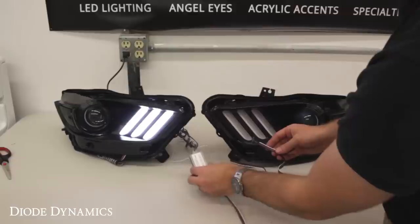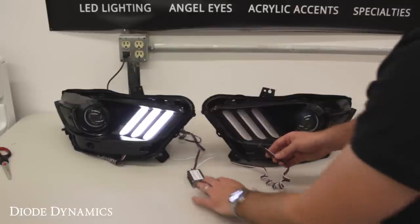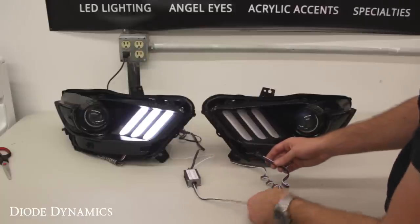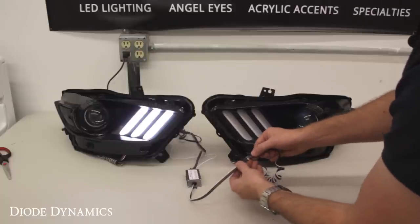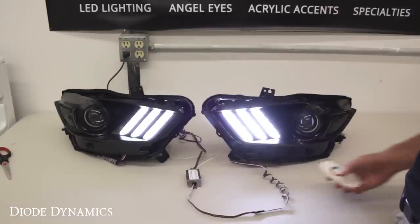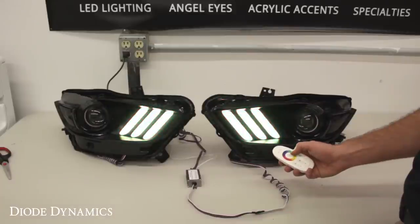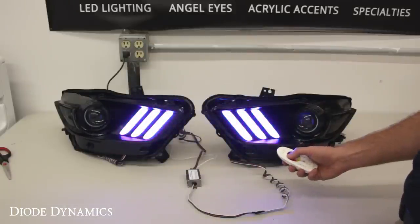So, we have this running to an RGBW controller, which is then powered by 12 volts or you can connect it to your car battery to test. Then, plug the boards into the driver and go ahead and test everything out. Once you're sure everything is working properly and looking good, go ahead and reseal your lights.